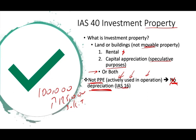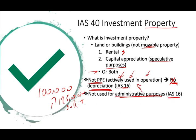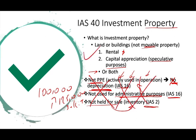Also, that building is not used for administrative purposes — housing your HR, payroll, or headquarters. If that's the case, it's used in operation and follows IAS 16. Investment property is also not something held for sale like inventory, unless you are in the business of buying and selling land — in which case the land is considered inventory and follows IAS 2. So investment property is either held for rental income, capital appreciation, or both.